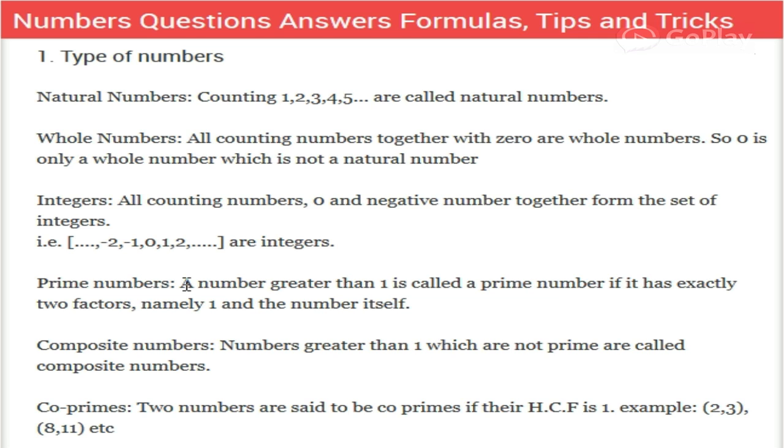Composite numbers are numbers which are greater than one and are not prime numbers. All numbers which are greater than one and not prime are composite numbers.